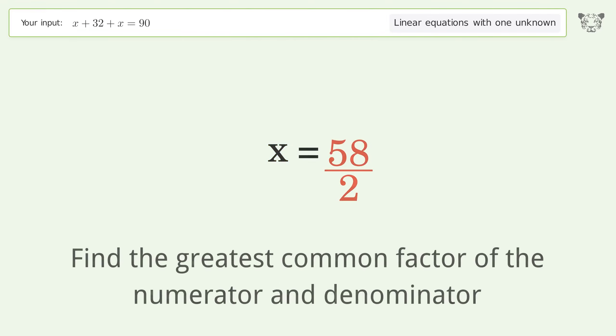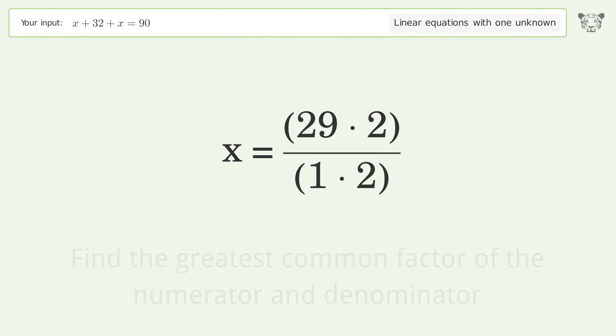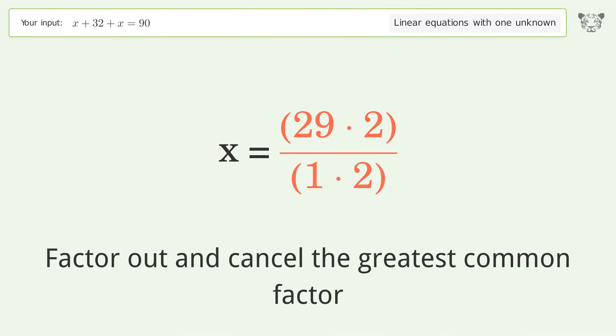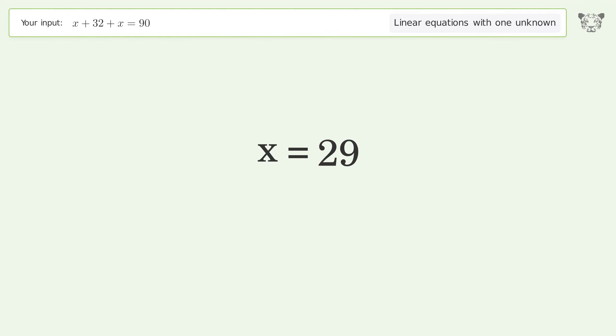Find the greatest common factor of the numerator and denominator. Factor out and cancel the greatest common factor. And so the final result is x equals 29.